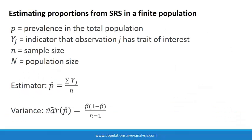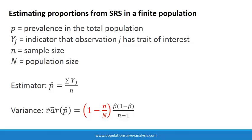Here are the equations we learned in the simple random sampling lecture to estimate prevalence and variance of prevalence. In small populations, we can adjust the variance estimate down, making a narrower confidence interval with something called the finite population correction, or FPC factor. The finite population correction factor is equal to 1 minus the sampling fraction, and it is simply multiplied by the variance estimate.